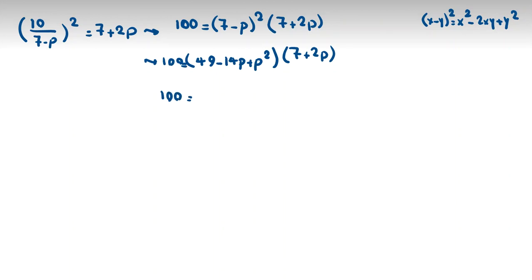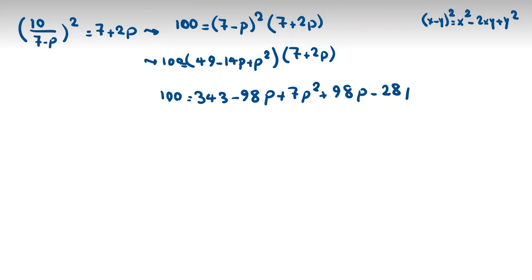So 100 equals 7 times 49, which gives 343, plus 7 times the remaining terms, giving minus 98p plus 7p squared, plus 98p minus 28p squared plus 2p cubed.